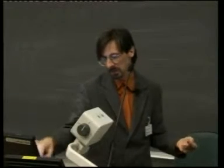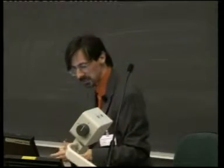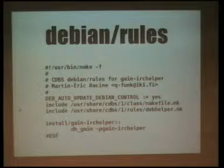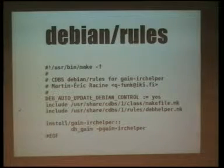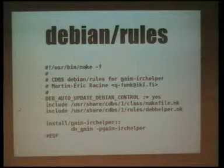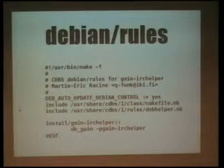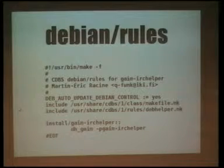The description field is fairly self-evident. The only detail is that between paragraphs you must use dots — you cannot put a blank line. Now we get to the core: the rules file. In this case, I've used CDBS, and the only thing I need to get everything to build is two includes — one for the makefile, and one for Deb Helper. Since this is a Gaim plugin, there's a separate helper that comes with gaim-dev which I've added. Basically, this is all I need from the three first files to end up with a Debian package based on that downloaded tarball.